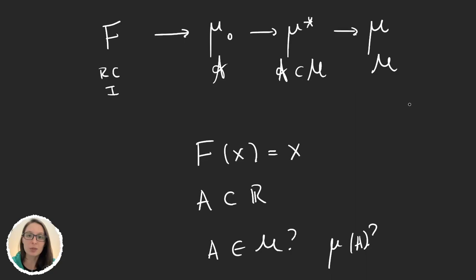But we know a few more things about the measure. We know that it's Borel regular, as we saw in the previous video. We know that we can approximate the measure of any set A as an infimum with compact sets or with open sets that cover it. So maybe you cannot calculate exactly the measure of A, but you can approximate it.